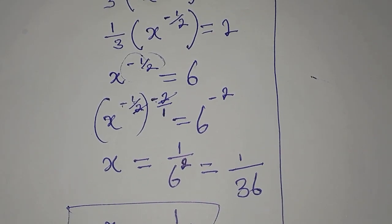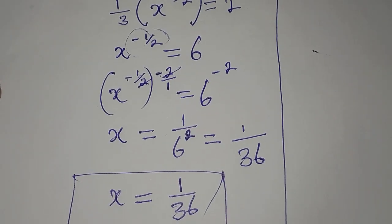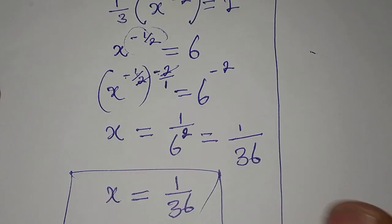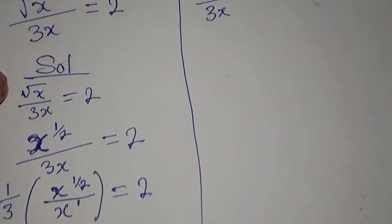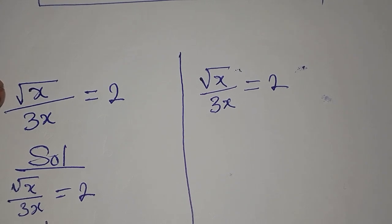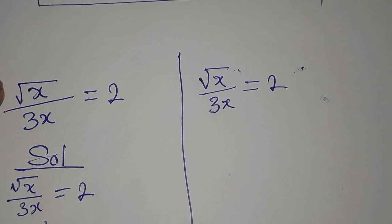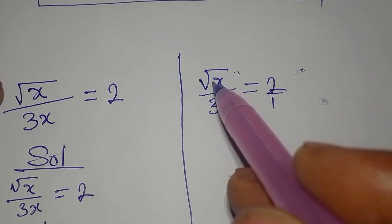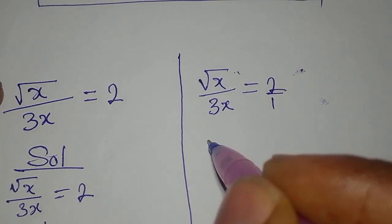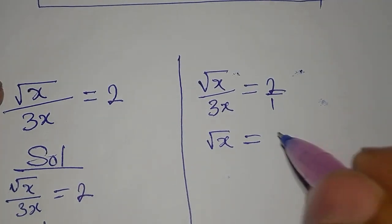Now, let's use the second method. I believe this method is not too lengthy. So this is the equation again. The second method is that I would directly cross multiply. This is over 1. Root x times 1 is root x, and then 3x times 2 is 6x.